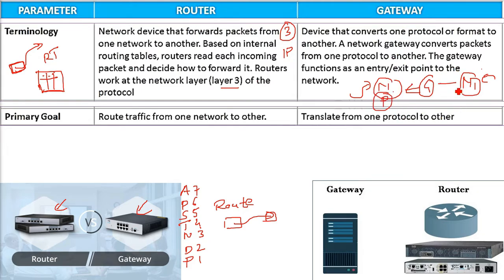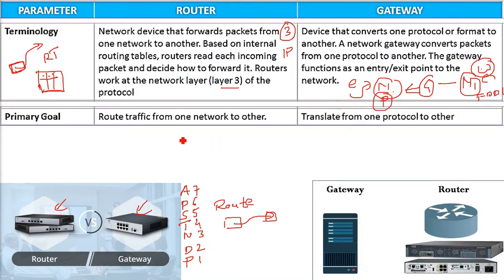The gateway translates from one protocol to another. The only work of the gateway is: one protocol to another protocol, connecting different networks with different protocols — it just translates from one protocol to another. This is the work of the gateway.